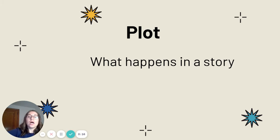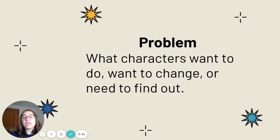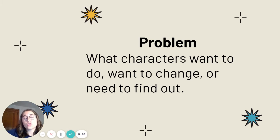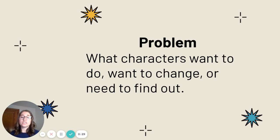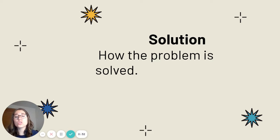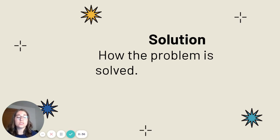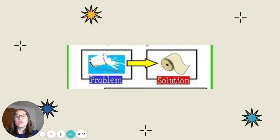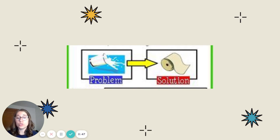Remember, when we talk about plot, that means what happens in a story. So in the plot there is usually a problem — something they want to change or what they need to find out. There is also a solution in the plot, or how the problem is solved. So if we have the problem of some spilled milk, you can have the solution of paper towels being used.